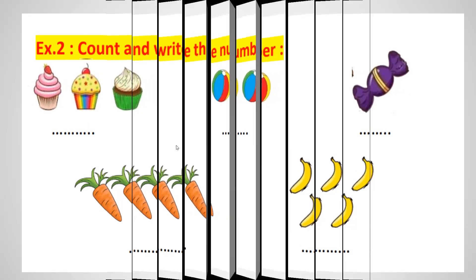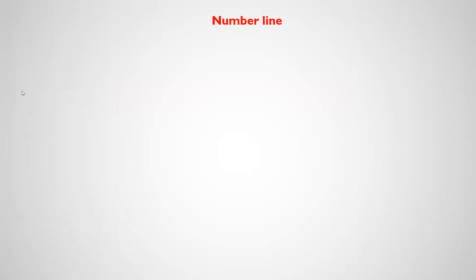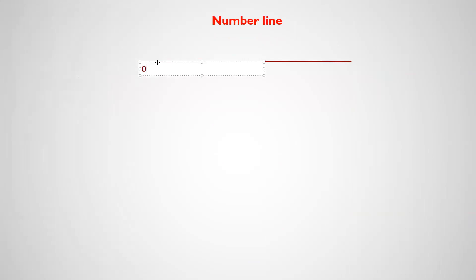Now let's move to another part which is called number line. What is the meaning of number line? A line means like that — this is a line. I want to put numbers on this line or represent the numbers on this line. We put them below the line, starting from 0. So here we have 0, after 0 is 1, after 1 is 2, after 2 is 3, after 3 is 4, and so on. When I put numbers below a line, I call it a number line.